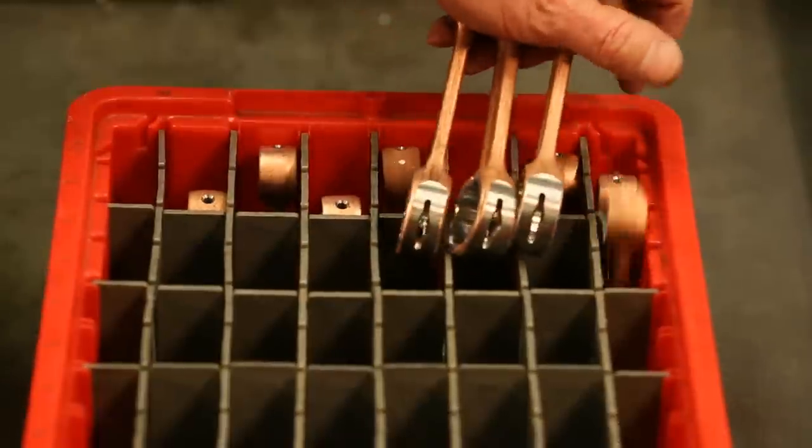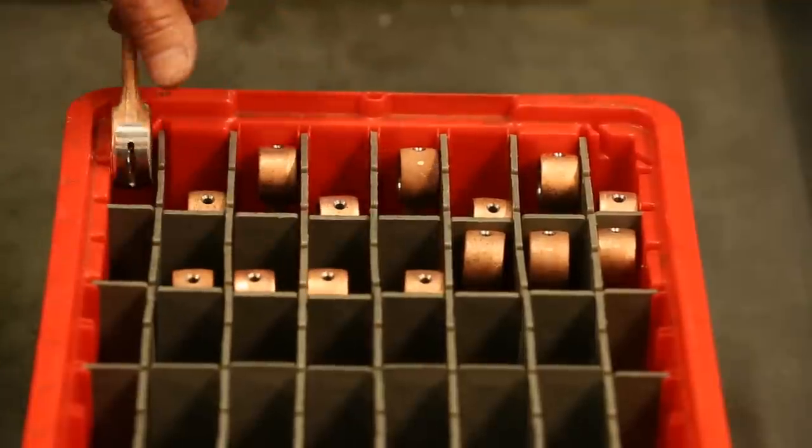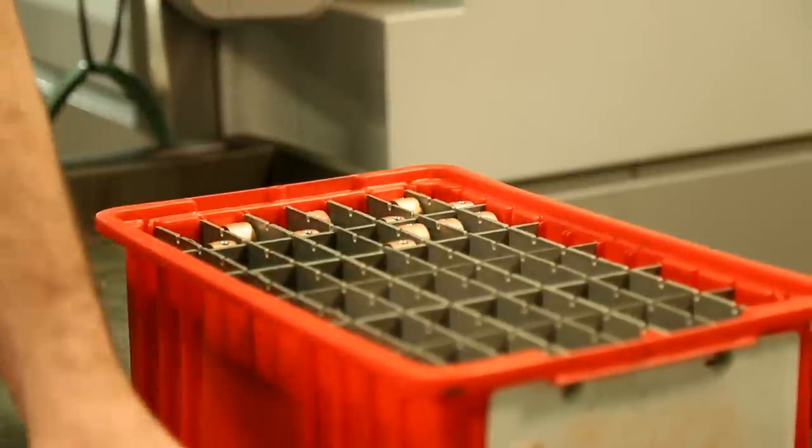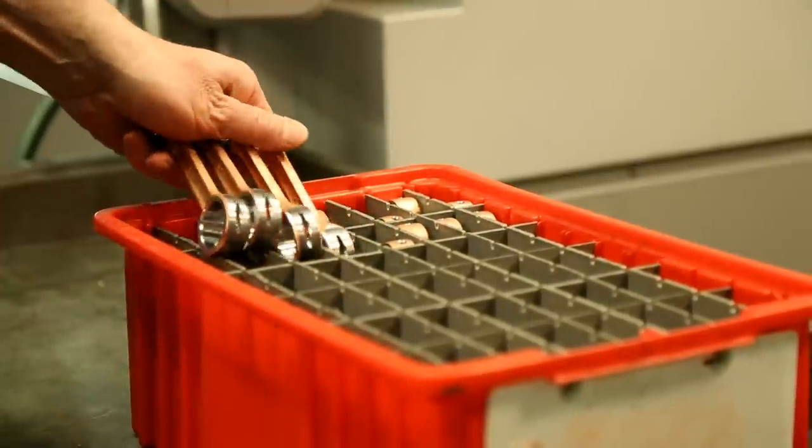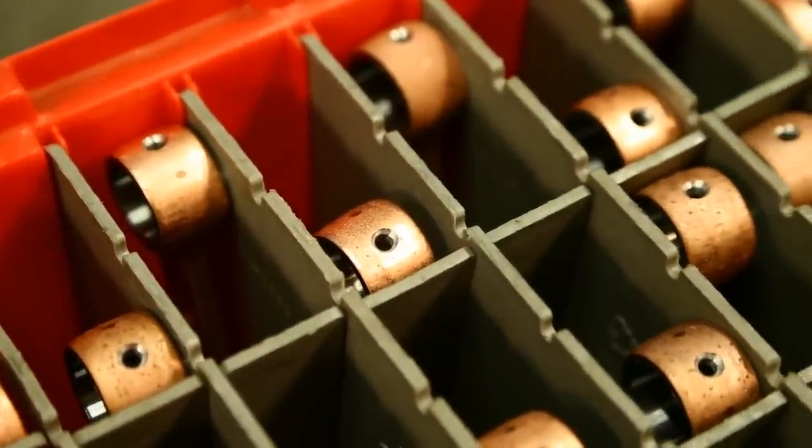After the rods have been machined on the mill, they are then put into totes and sent out for heat treatment. Keeping the rods in these plastic totes is an efficient way for the production team to track the progress and location of each batch of rods, while also keeping them from contacting each other during transport to heat treatment.